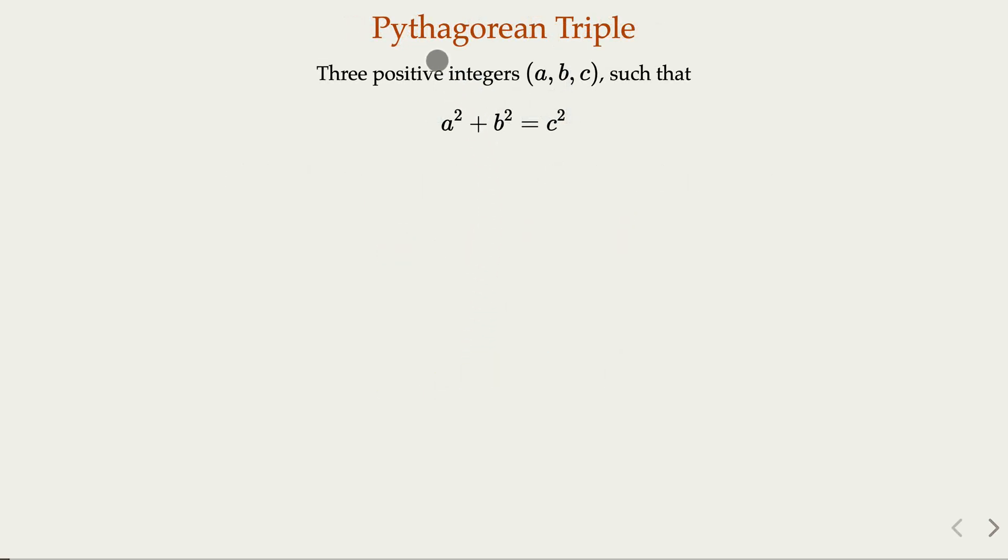Let's review that a Pythagorean triple are three positive integers a, b, c so that they can be the side length of a right triangle. They satisfy this constraint, the equation a squared plus b squared equals c squared.